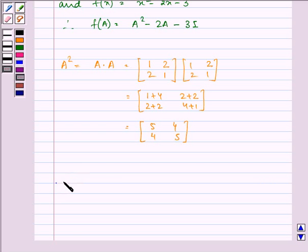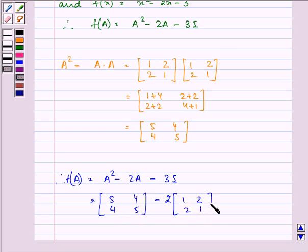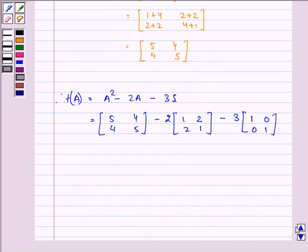Therefore, we have f(A) equal to A squared minus 2A minus 3I. Let us substitute the values: A squared is 5, 4, 4, 5, minus 2A that is 1, 2, 2, 1, minus 3I that is 1, 0, 0, 1. So, let us solve it.